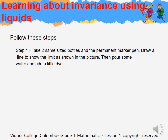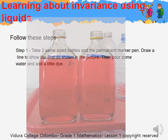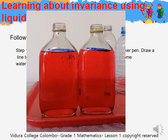Learning about invariance using liquids. Follow these steps. Step 1: Take 2 same size bottles and the permanent marker pen. Draw a line to show the limit as shown in the picture. Then pour some water and add a little dye.